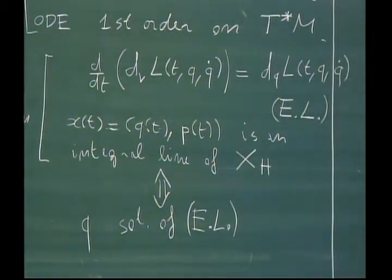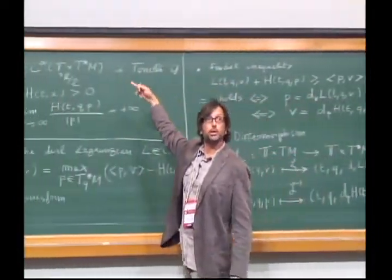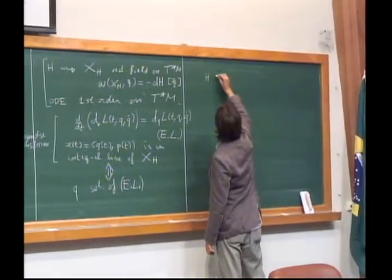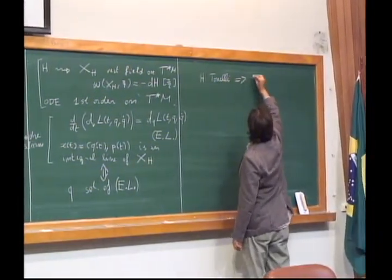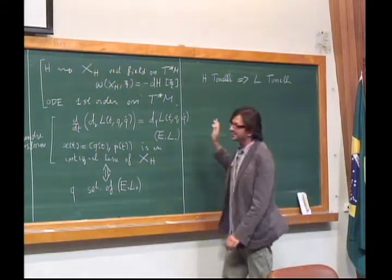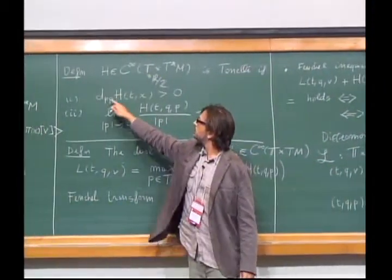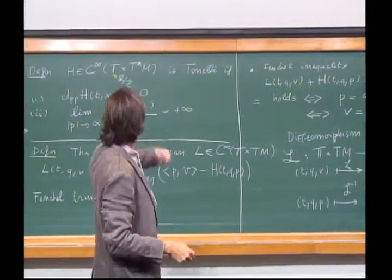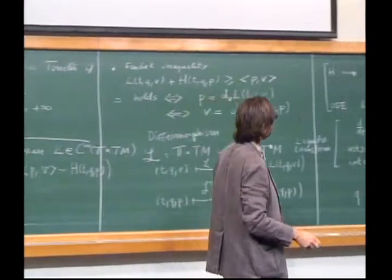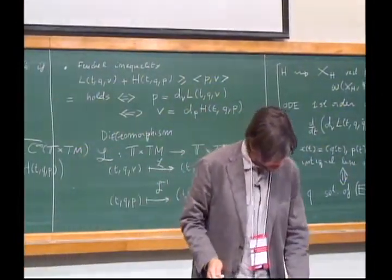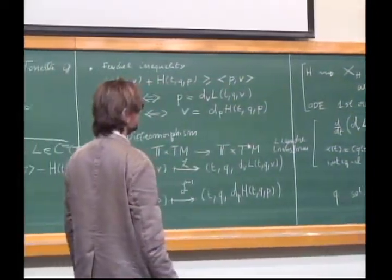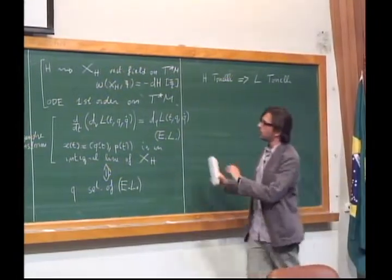The Tonelli assumptions are involutive: if H is Tonelli, then L is also Tonelli, meaning L satisfies the same assumptions with p replaced by v — strictly convex and superlinear. And applying the Fenchel transform twice returns you to H. This is what I wanted to say about this duality: we have two languages for looking at the same system — first-order with H, or second-order with L.